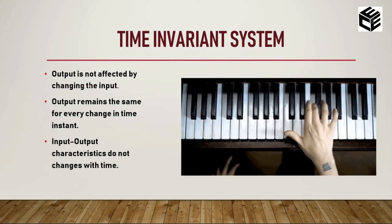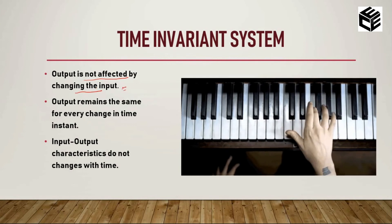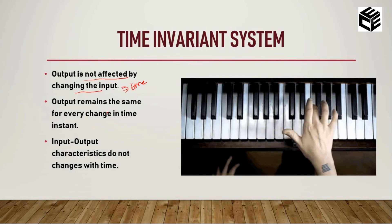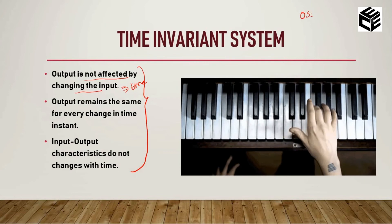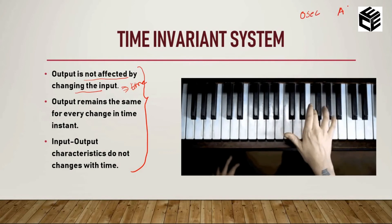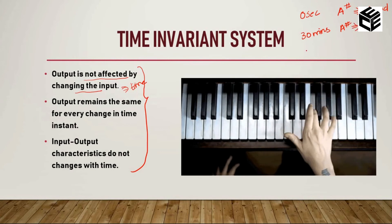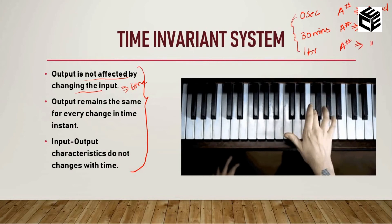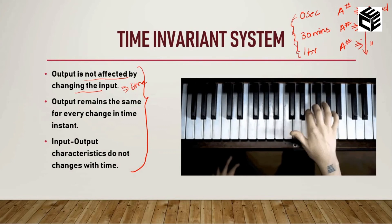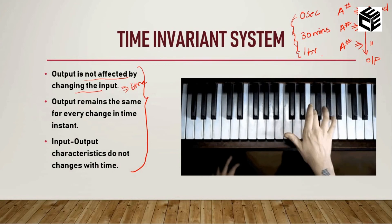A time invariant system is one where the output is not affected by changing the time of the input — the input-output characteristic does not change with respect to time. For example, at time 0 seconds pressing key A-sharp on a piano produces a sound. After 30 minutes pressing the same A-sharp key produces the same sound. After one hour, the same sound is generated. The output does not vary with respect to when the input is applied — this is a time invariant system.